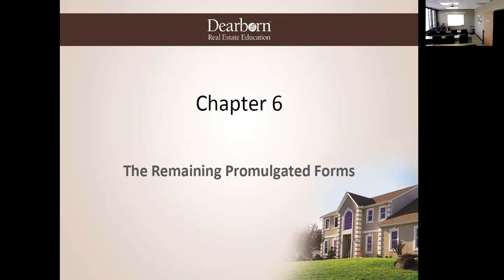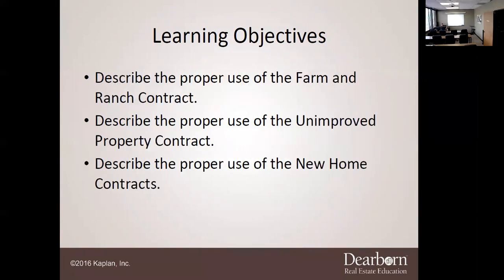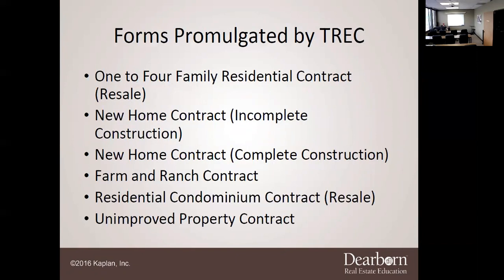In Chapter 7 we went over the addenda and everything else promulgated by TREC, but these are going to be the other five contracts besides the one-to-four family — so the one-to-four family and then five others, six total. Learning objectives today: we're going to identify how the other five promulgated contracts differ from the one-to-four family, describe proper use of the residential condominium contract, farm and ranch, unimproved, and the new home contracts — both complete and incomplete.